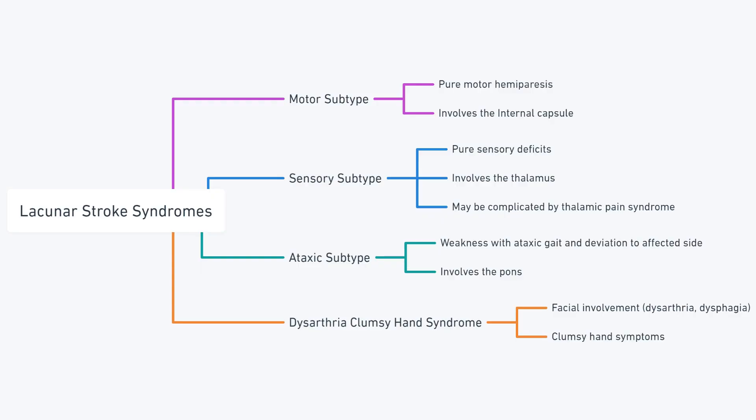Lacunar Stroke Syndromes can be divided into motor, sensory, ataxic, and dysarthria clumsy hand syndromes. The motor subtype is the most common type overall. This results in a pure motor hemiparesis due to stroke involving the internal capsule.